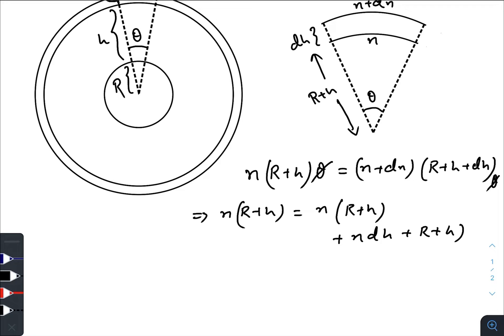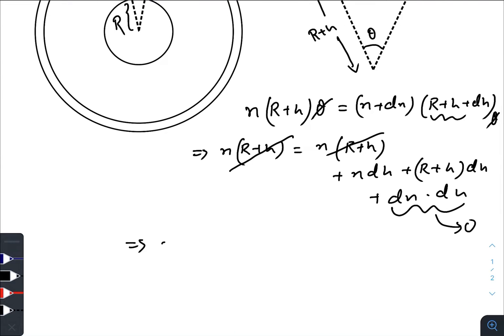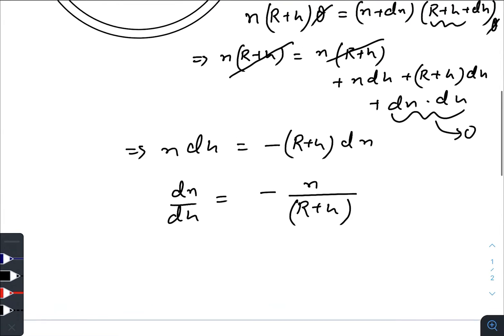n(R + h) θ gets cancelled out here. We have n(R + h) + n(dh) + (R + h)(dn), and dn times dh. As we know that dn and dh both are very small, we can just ignore this term. These two terms get cancelled out. So finally we have n·dh = -(R + h)·dn. So we have dn/dh = -n/(R + h).